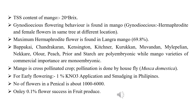Mango is a cross-pollinated crop and pollination is done by housefly, whose zoological name is Musca domestica. For inducing early flowering, 1% potassium nitrate application is sometimes practiced, and this is also practiced in the Philippines for initiation of early flowering.